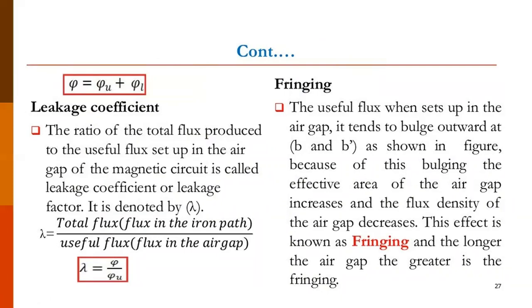This effect is known as fringing, and the longer the air gap, the greater is the fringing. Spreading of the flux at the edges of the air gap is called fringing. As the air gap is more, more and more spreading occurs, and as more spreading occurs, more fringing occurs. So fringing is directly proportional to the length of the air gap. This tendency of flux to bulge out at the edges of the air gap is called magnetic fringing. It has two effects: it increases the effective cross-sectional area of the air gap, and it reduces the flux density in the air gap.